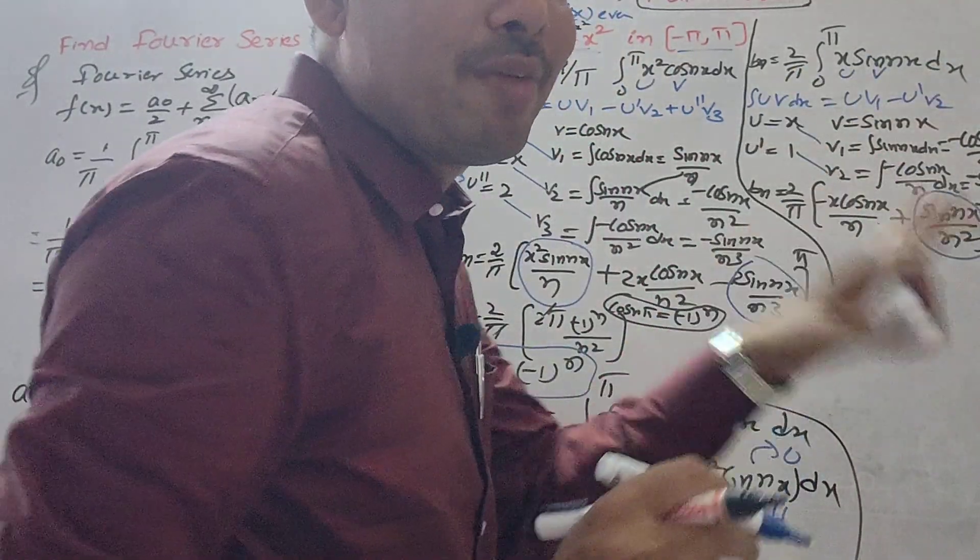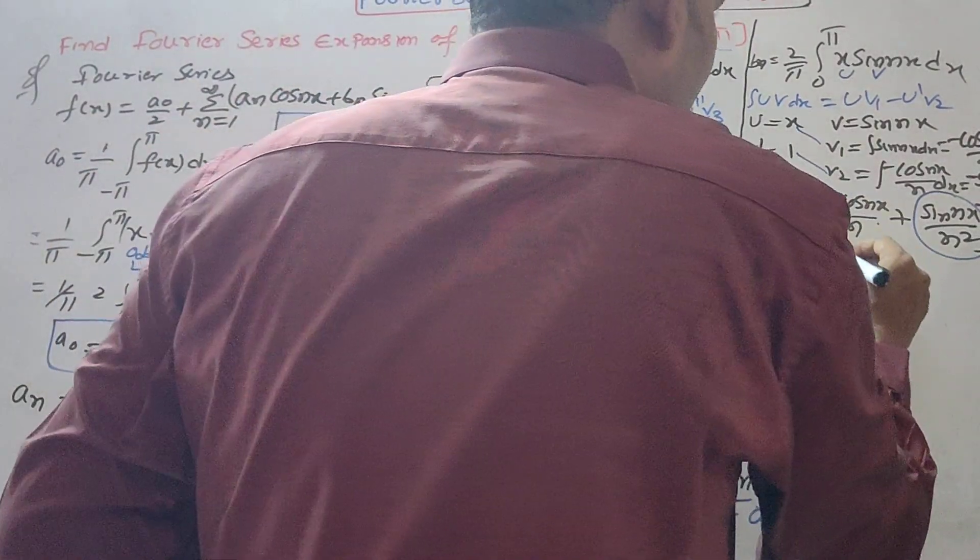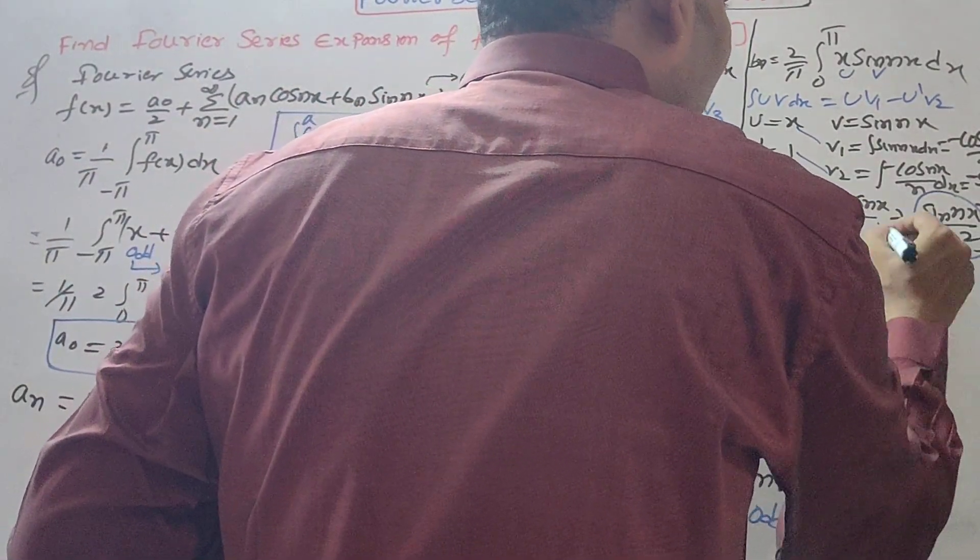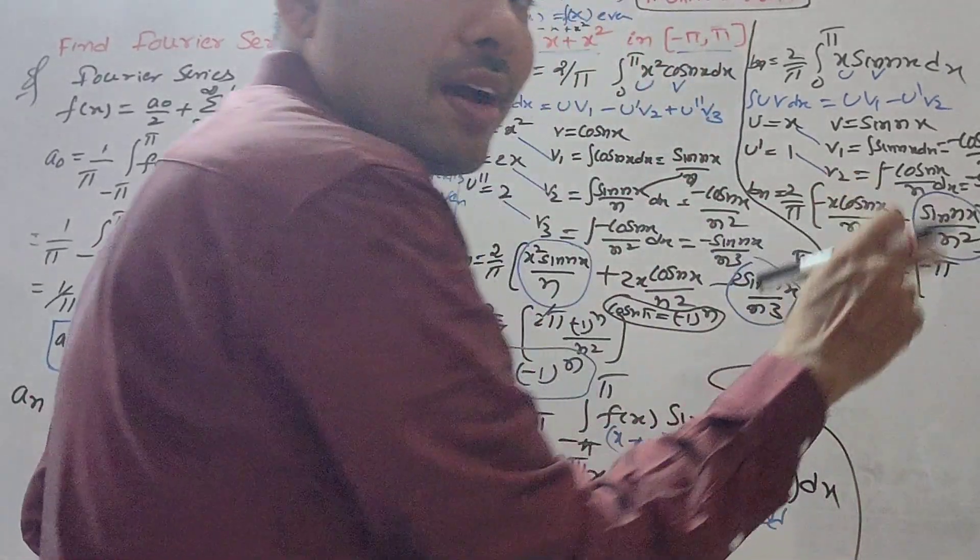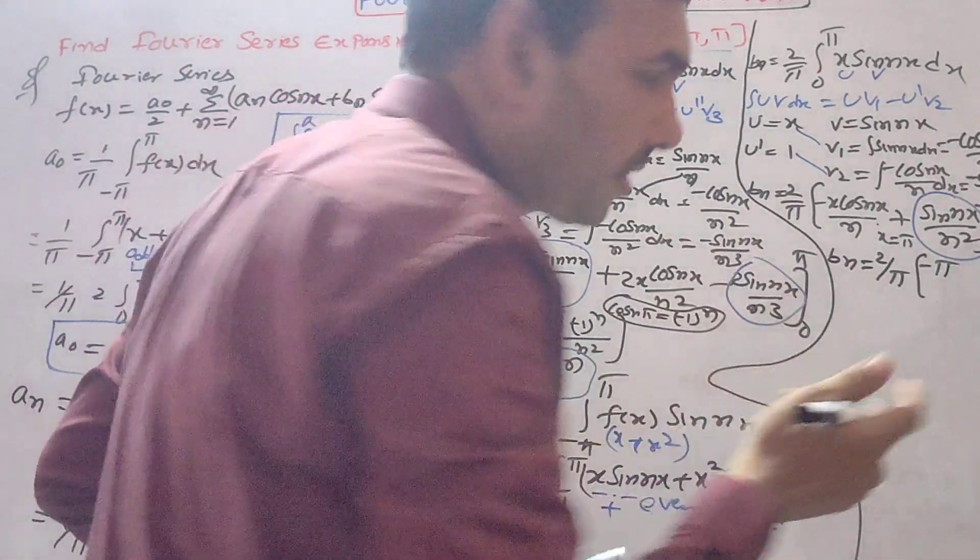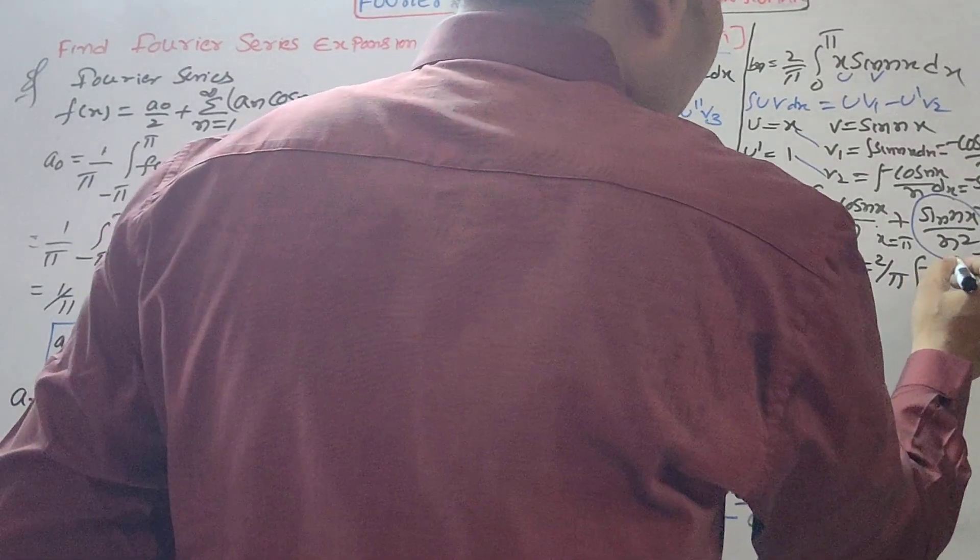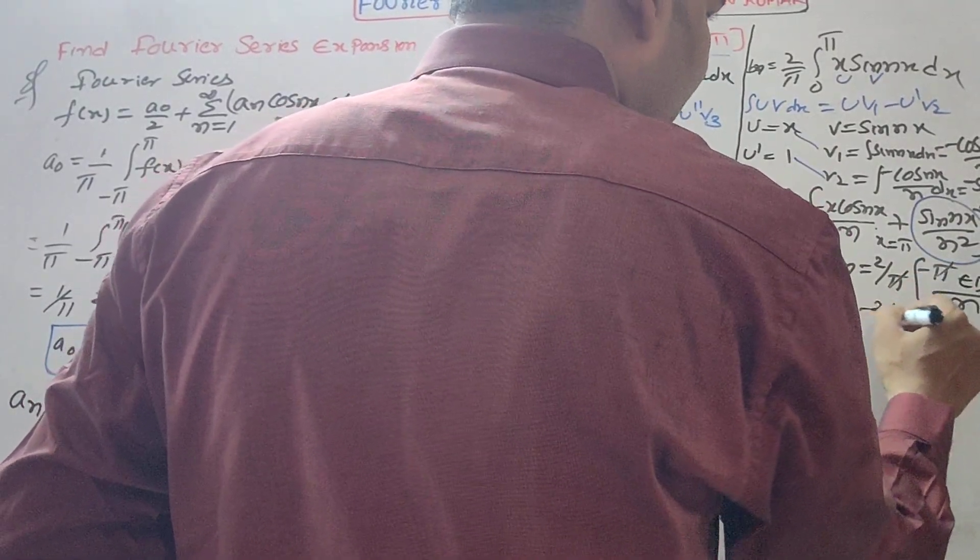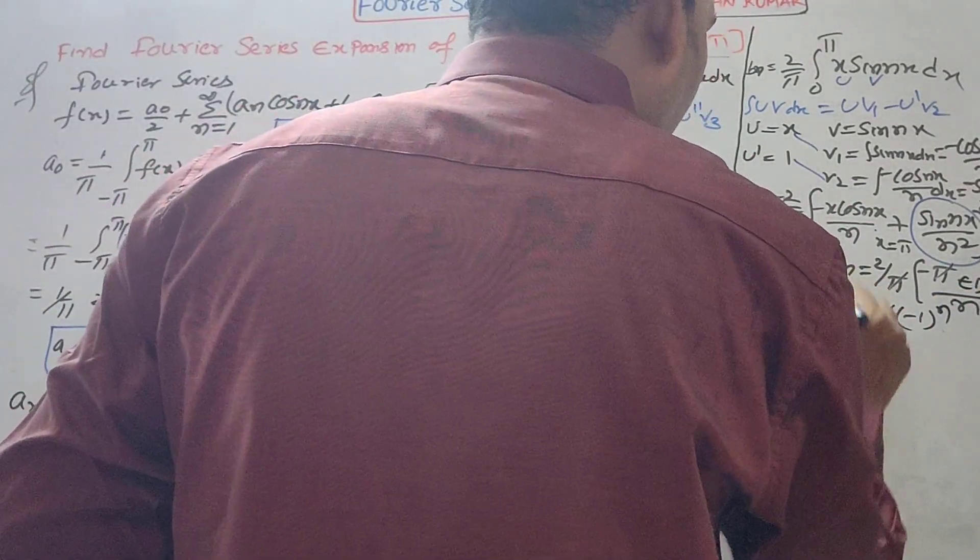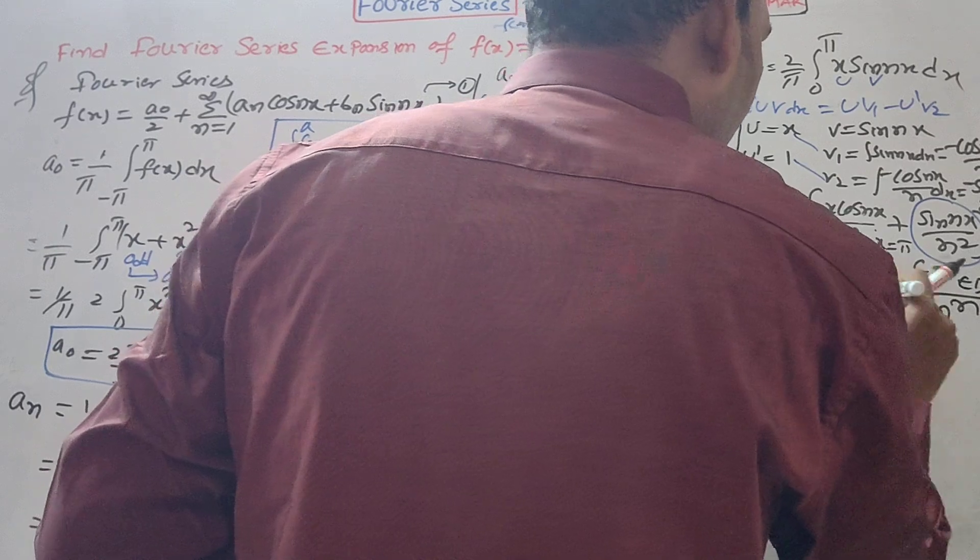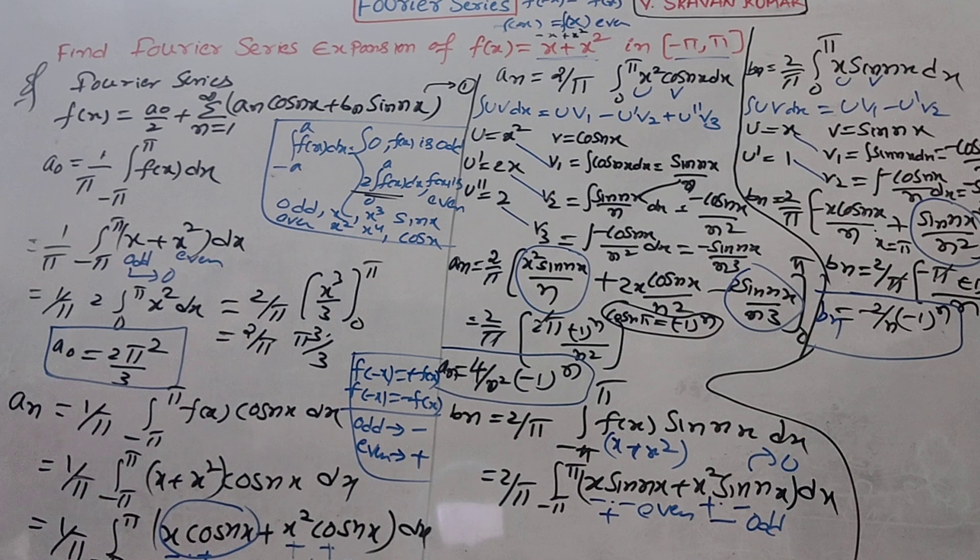The sin term becomes 0 since sin 0 = 0 and sin nπ = 0. For the lower limit, when x = 0, we get 0. For the upper limit, x = π: -π cos nπ/n. Since cos nπ = (-1)ⁿ, π cancels, and we get bₙ = -2/n(-1)ⁿ.